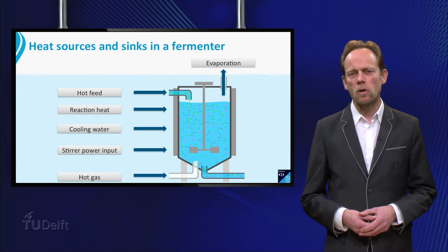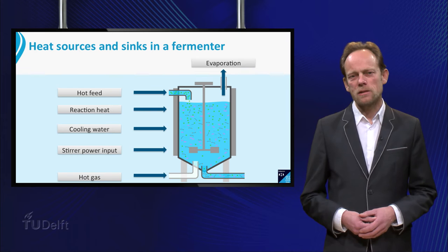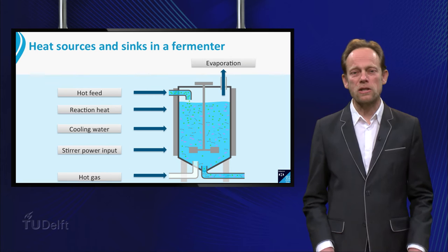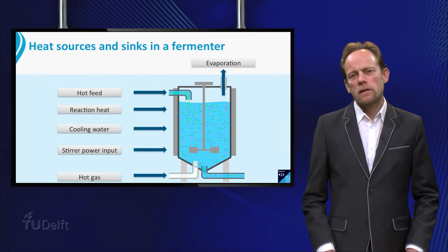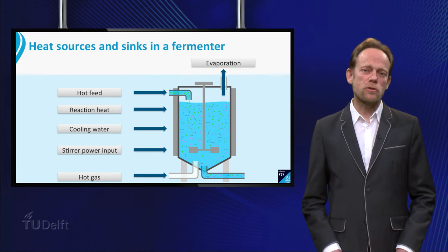In stirred tank reactors, the second most important term of heat production is the impeller. Energy dissipation via the impellers can add another 10 to 30 percent of heat on top of the reaction heat. The advantage of a bubble column or airlift loop reactor is then clear, because they don't have an impeller. There can be other sources of heat as well, such as hot feed streams or hot gases that are introduced into the broth.